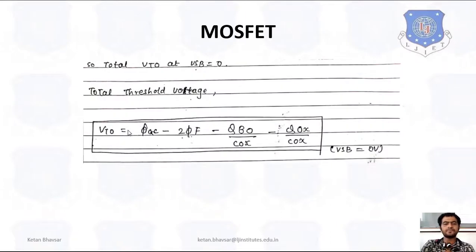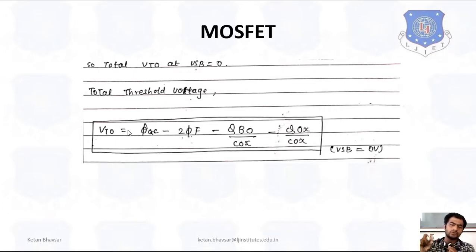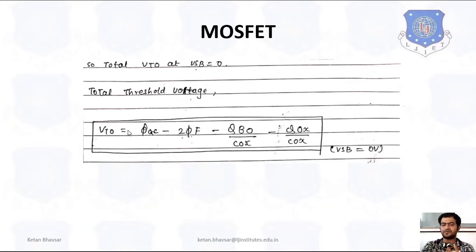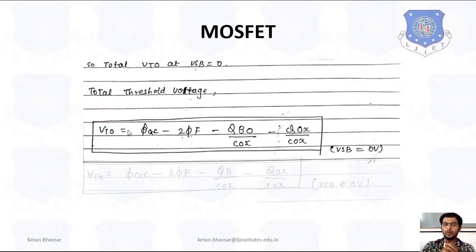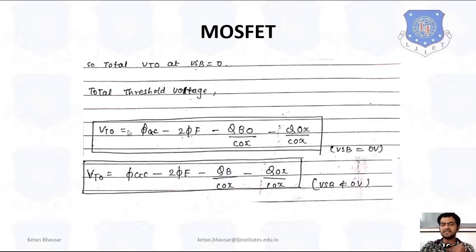At Vsb equal to zero, the total threshold voltage Vto is: Vto equals φGC minus 2φF minus QbO/Cox minus Qox/Cox. These four parameters — work function difference, surface inversion potential, body/substrate charge term, and oxide charge term — all affect the specific threshold voltage, as seen in the first case.